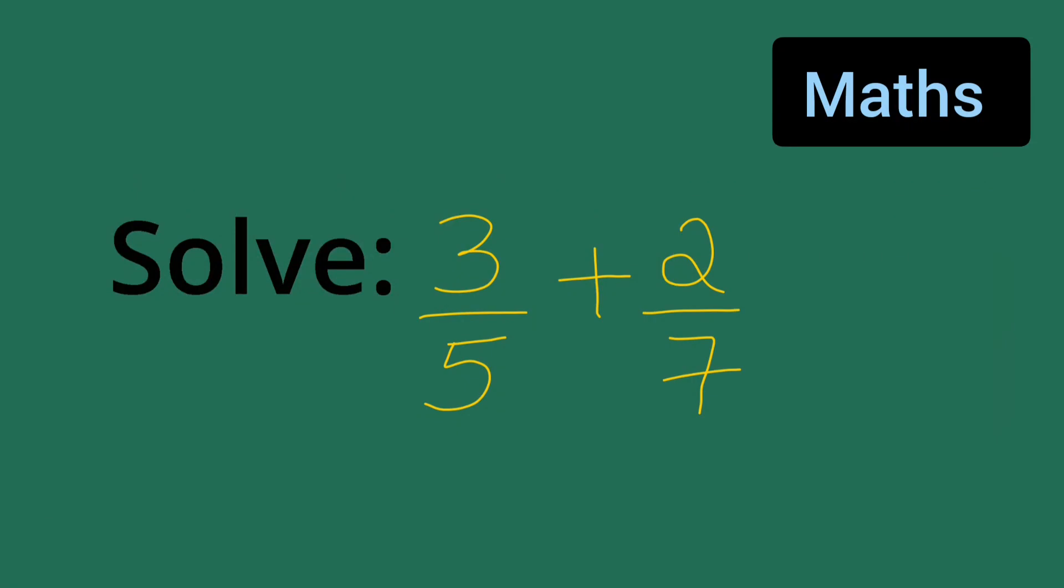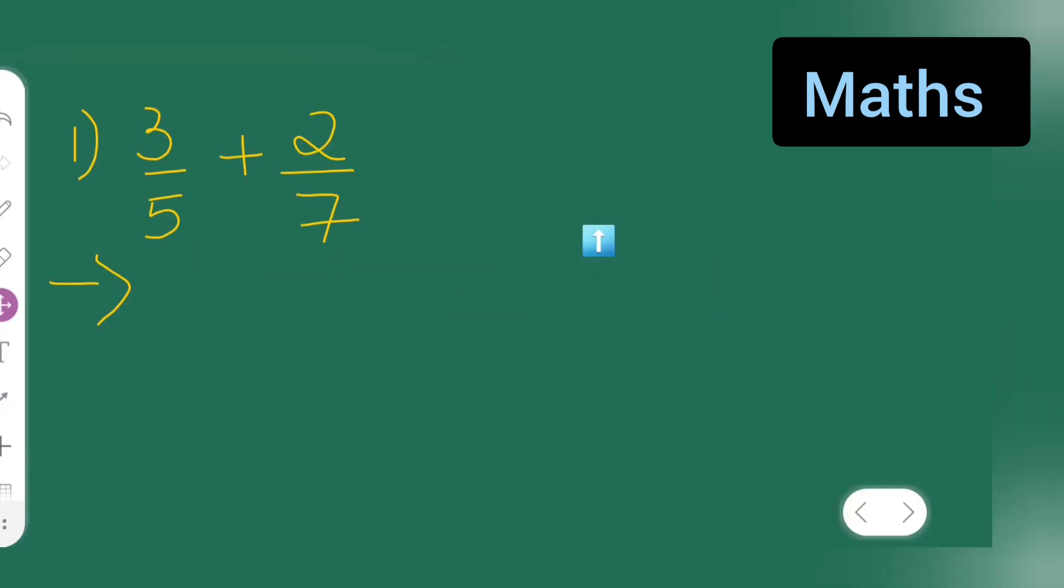So in today's class of mathematics, let us solve 3 upon 5 plus 2 upon 7. Let us start. First I'll take down this. So basically we have to add these two numbers, right? 3 upon 5 plus 2 upon 7. The problem is the denominator is different.